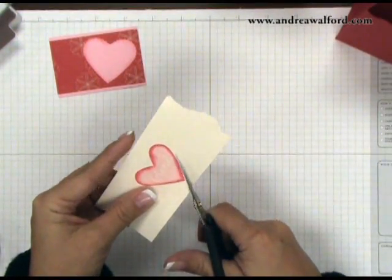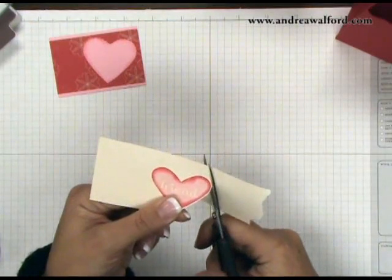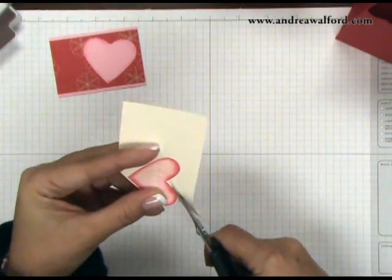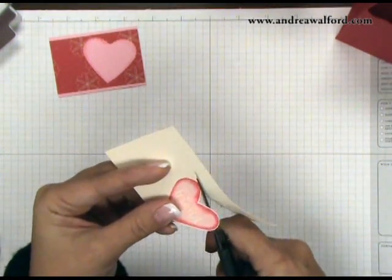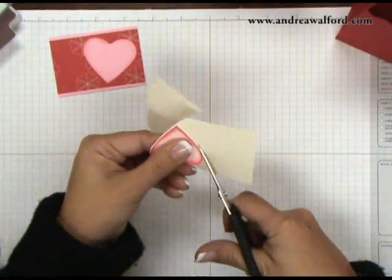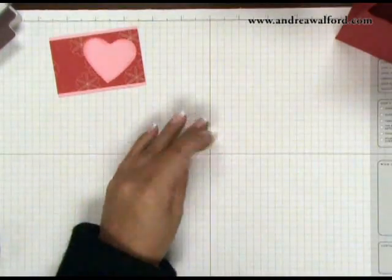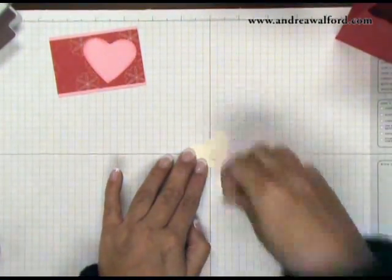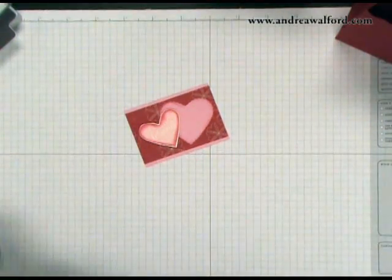You now want to cut out your heart and you want to leave a small border of very vanilla around it. Once you've done that, you can take a Stampin' Dimensional, put it on the back, and then stick that onto your Pretty in Pink cardstock piece on an angle.